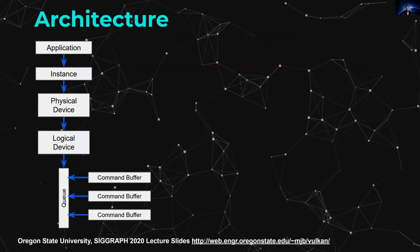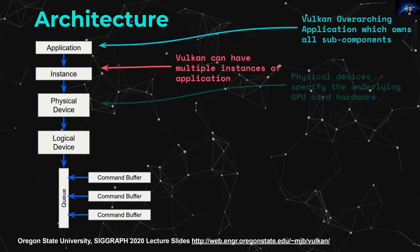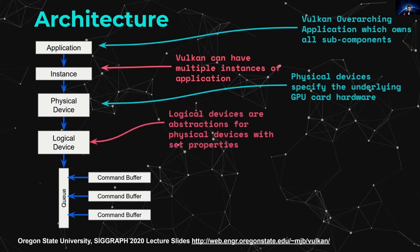Now let's look at the Vulkan SDK architecture. The Vulkan application is the overarching component. From applications, you can spin up instances, which allow you to talk with your physical hardware. The physical device is the component that refers to the actual physical graphics card in your computer. You can then create logical devices or views that allow you to interact with that physical device. You can have multiple logical devices for one physical device, multiple physical devices for an instance, and multiple instances for an application.